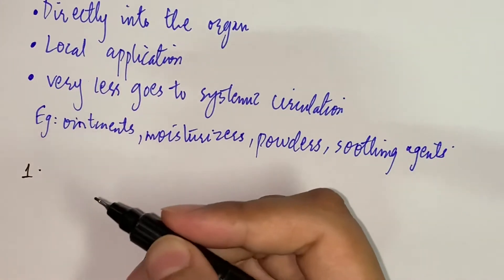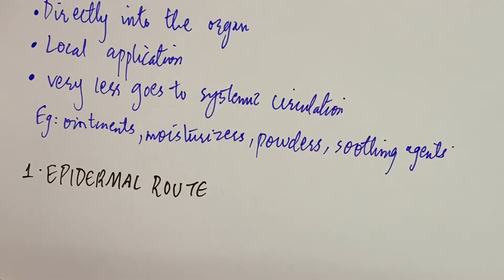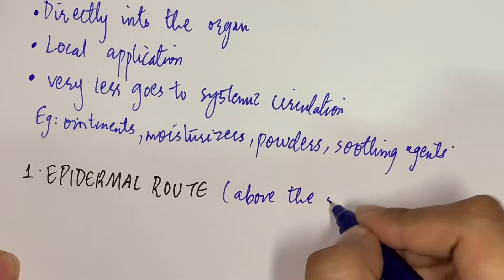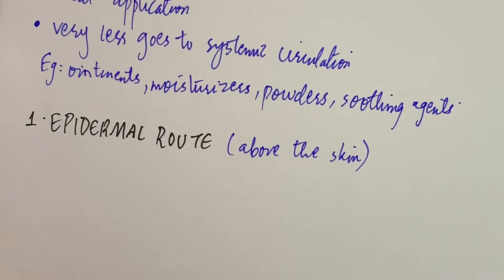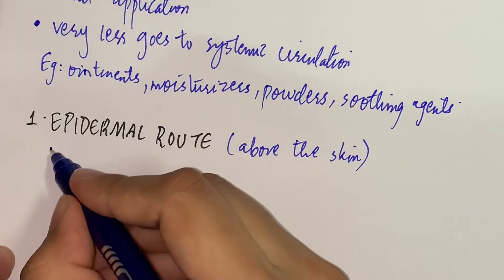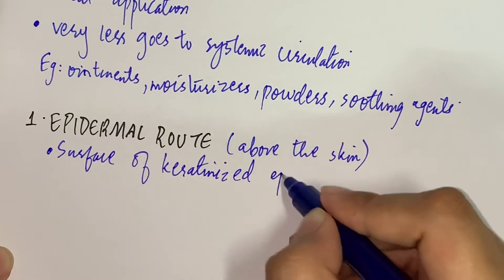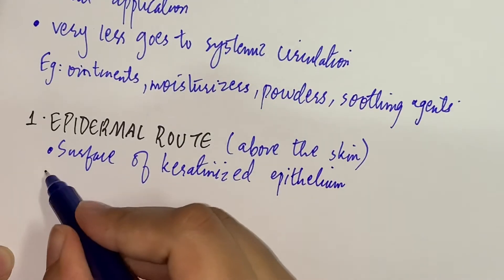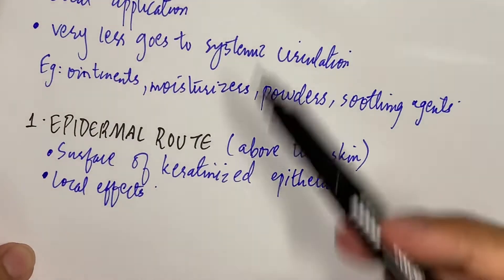The first type is the epidermal route — 'epidermal' meaning above the skin. It acts on the surface of keratinized epithelium. When we put a cream or moisturizer on the skin, it gives local effects. This is the epidermal route.